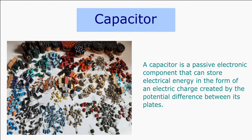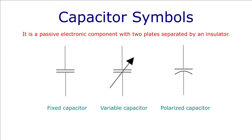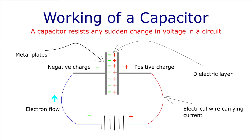A capacitor is an electronic component that can store energy in the form of an electric charge, creating a potential difference between its plates. It is a passive electronic component that has two plates separated by an insulator. The capacitor stores electrical energy in the form of an electric charge between the two plates. The charge is stored by the application of voltage between the two plates, which can be either positive or negative depending on the direction of charge.